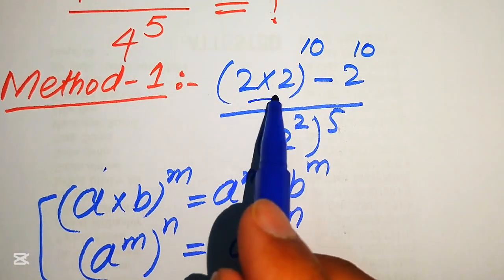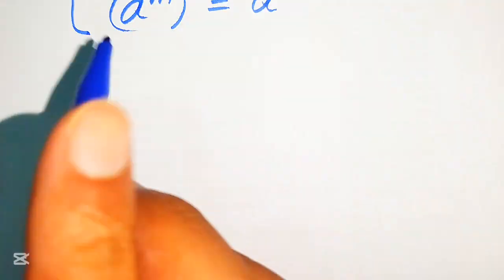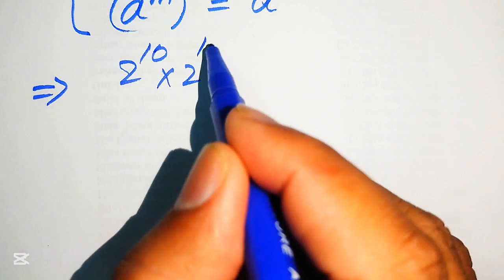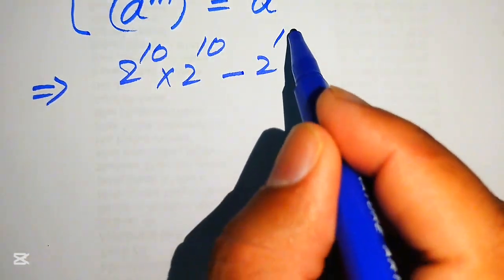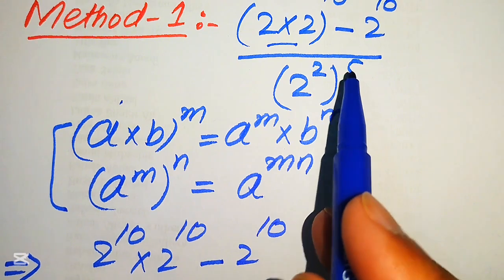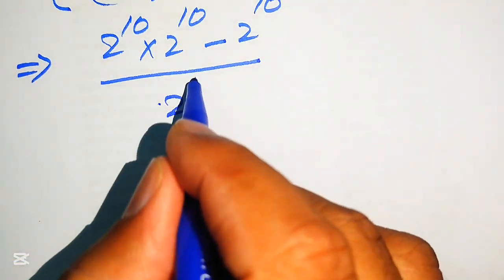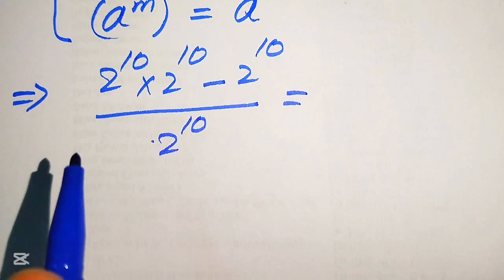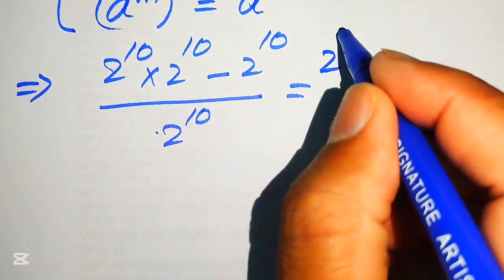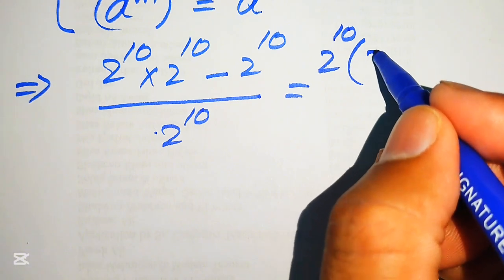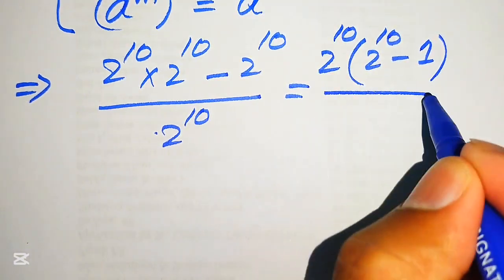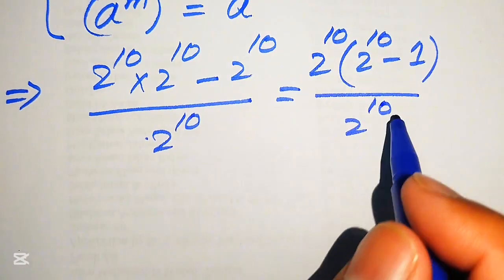Applying the first exponent law, we get 2^10 × 2^10 minus 2^10, divided by — when we multiply the exponents 2 and 5, the denominator becomes 2^10. In the numerator we take 2^10 as a common factor, giving us 2^10 times (2^10 − 1), divided by 2^10.